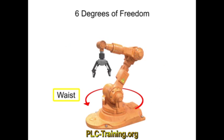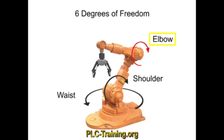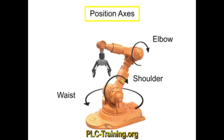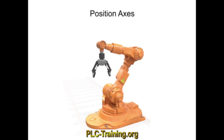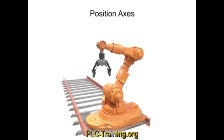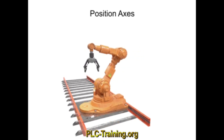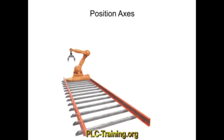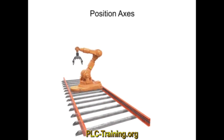These particular motions help to locate the tool in the work area and are called position axes. Most robots have at least three position axes to help position the tool in the work area. If the robot were to slide along a track, it would have a fourth position axis of linear movement and another degree of freedom.